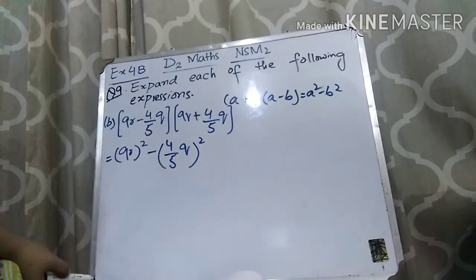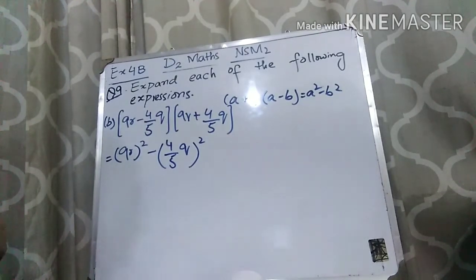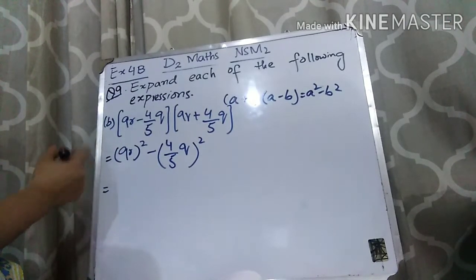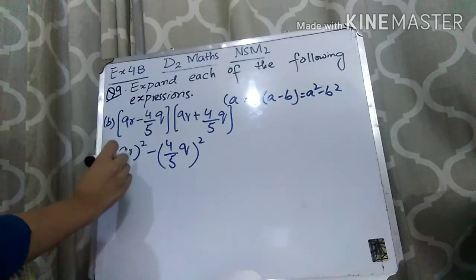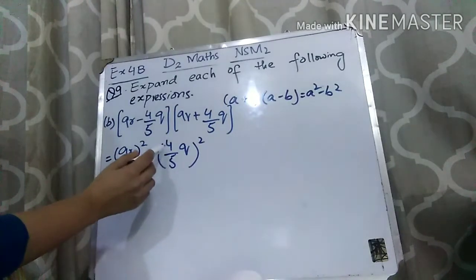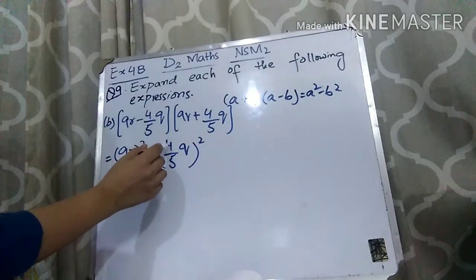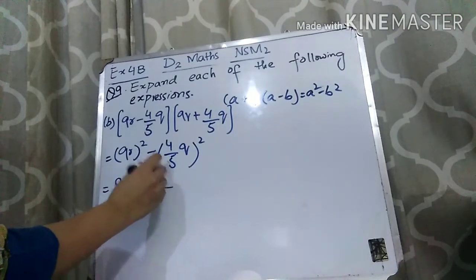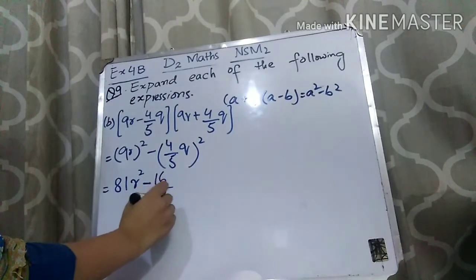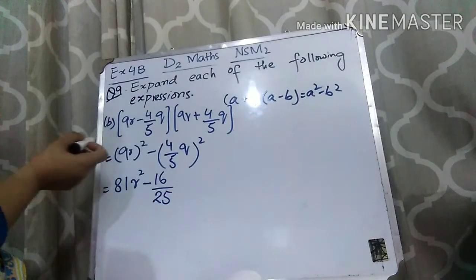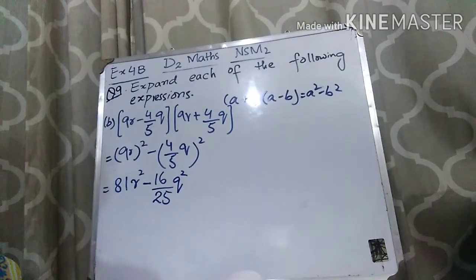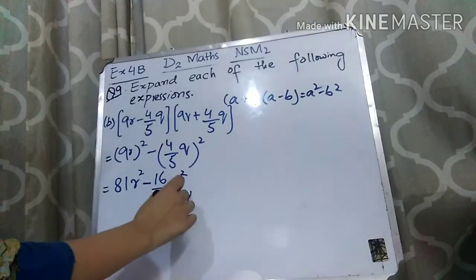So applying the formula: A squared minus B squared gives (9R)² minus (4/5 Q)². Now we solve it: 9 squared means multiply 9 two times — 9 times 9 is 81 — giving 81R squared. Minus: take the square of numerator 4, which is 16, over the square of denominator 5, which is 25, times Q squared. So the answer is 81R squared minus 16/25 Q squared.